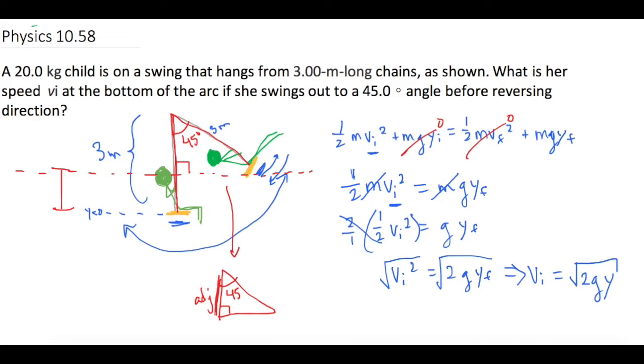We want to solve for adjacent, so we're going to use cosine. So we have cosine of the angle, which is 45, equals adjacent over hypotenuse. We know the hypotenuse is 3. So let's isolate the adjacent side by multiplying both sides by the hypotenuse.